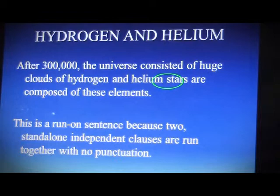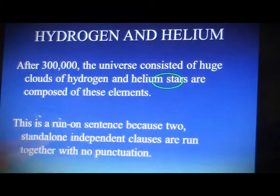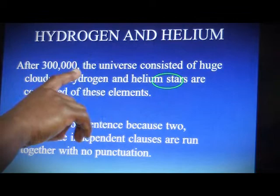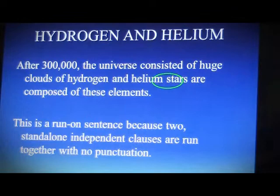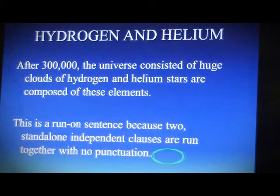Hydrogen and helium. After 300,000 years, the universe consisted of a huge cloud of hydrogen and helium — stars composed of these elements. This is a run-on sentence because there are two stand-alone independent clauses that run together. Let's see what they are. After 300,000 years, the universe consisted of huge clouds of hydrogen and helium — that's one independent clause. Stars are composed of these elements. You need something that's going to connect this independent clause with the next sentence.